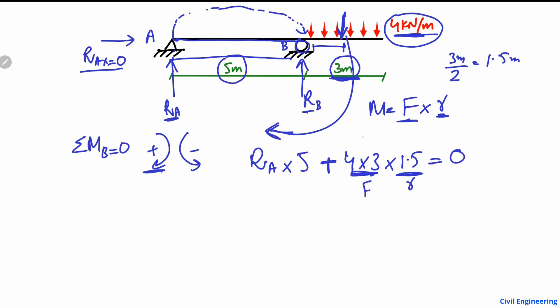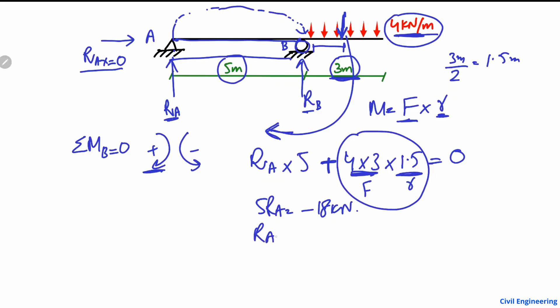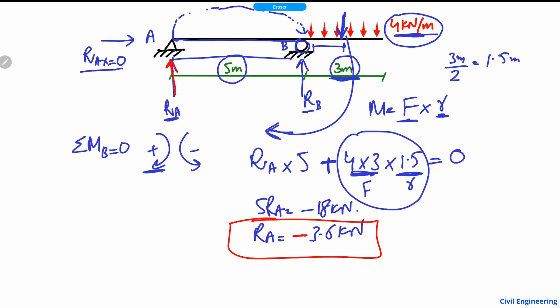Setting the summation of moments about B equal to zero: RA × 5 + 4 × 3 × 1.5 = 0, which gives 5RA = −18 kN·m, so RA = −3.6 kN. The negative sign is very important — it means our assumed direction for RA was wrong. So RA is not acting upward but downward, at 3.6 kN.